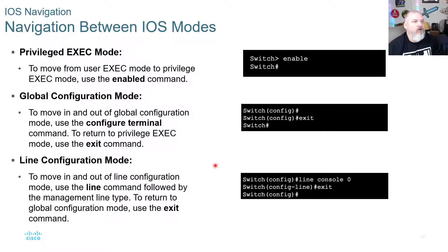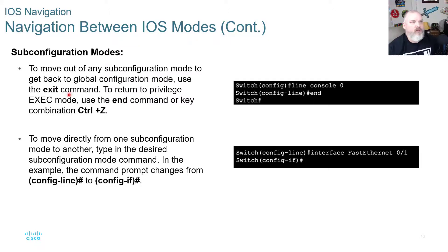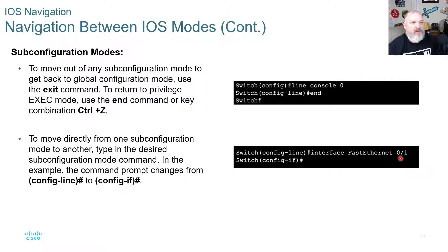In Line Config mode, you can select 'line console 0' to configure the console line, and use 'exit' to back out. In sub-configuration modes, you can also use 'end' to jump all the way back to Privilege Exec mode instead of exiting one level at a time. To move directly from one sub-configuration mode to another, type the desired sub-config mode command — for example, typing 'interface fastethernet 0/1' from config-line will take you directly to the interface configuration mode.